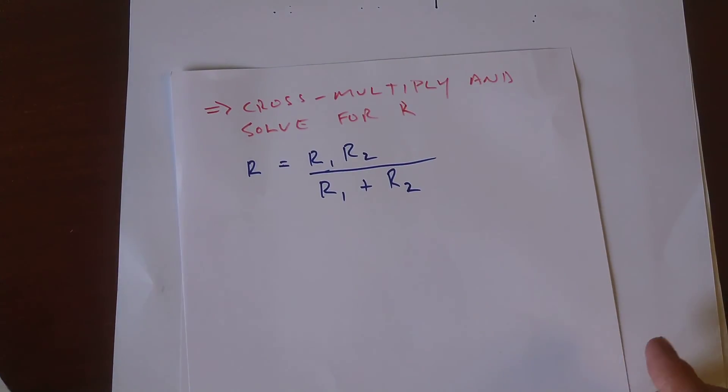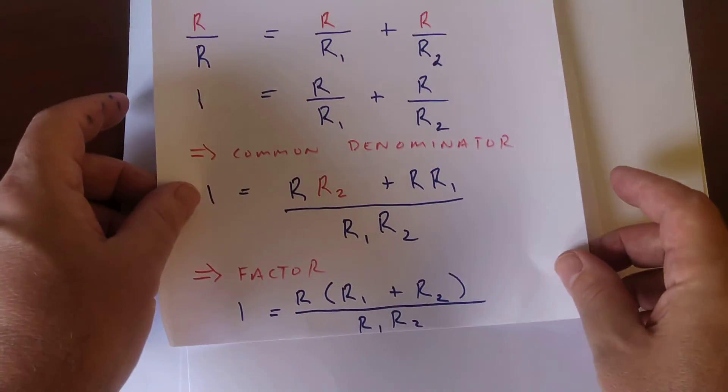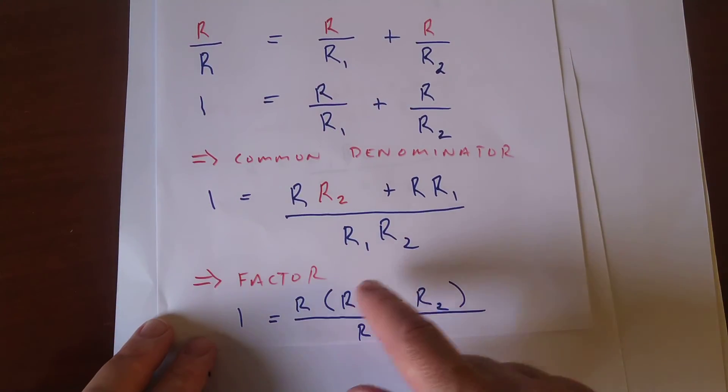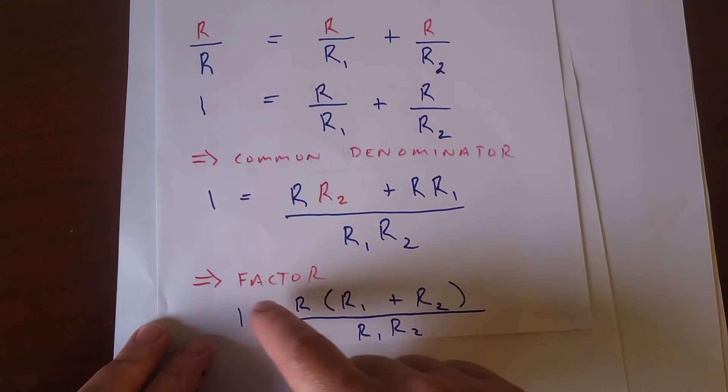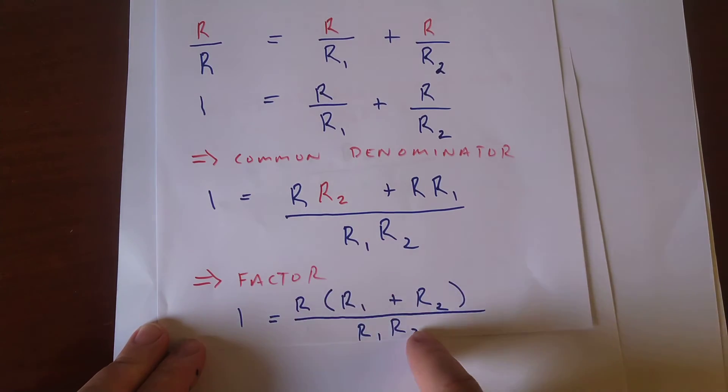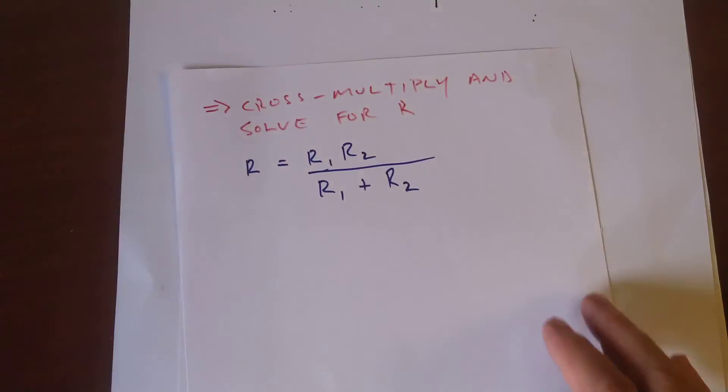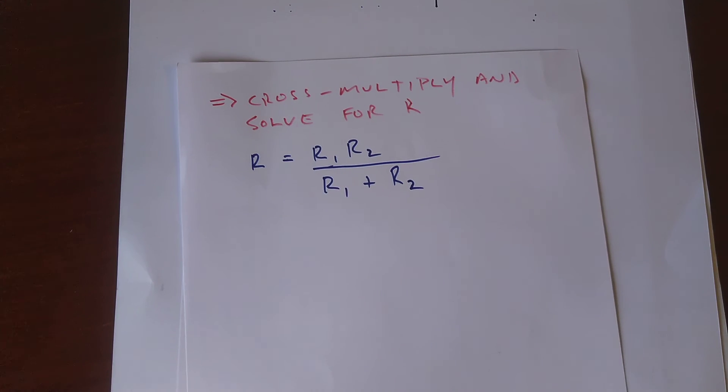So let me go back here. So here's what we got. We're trying to get R by itself. So I'm going to multiply the top by R₁R₂. And then I'm going to divide both sides by R₁ plus R₂. And here's what we're left with. And there's the solution.